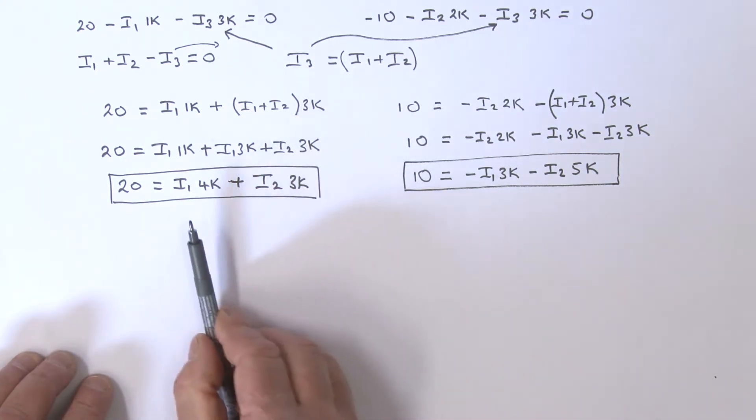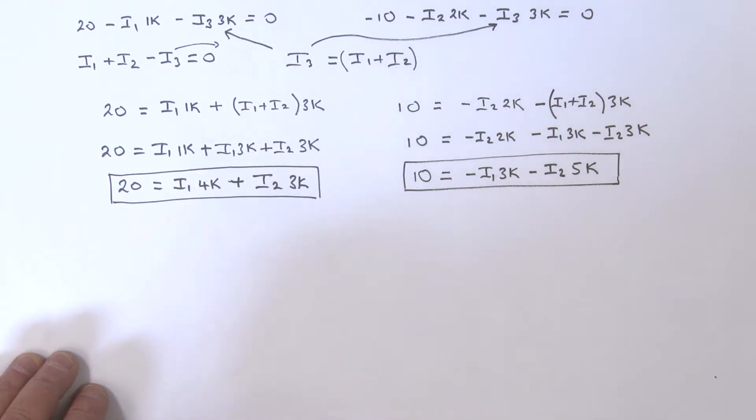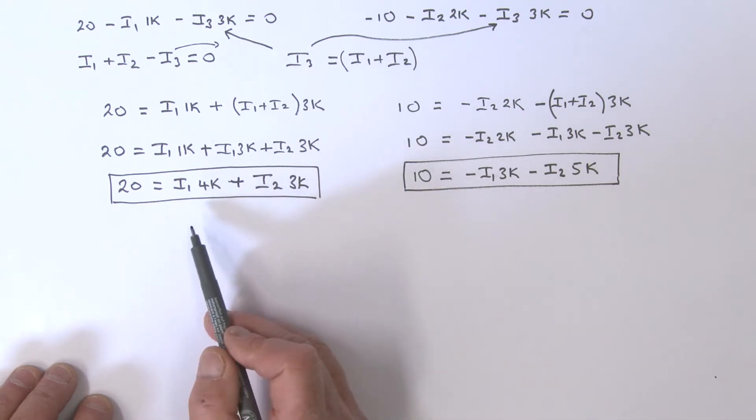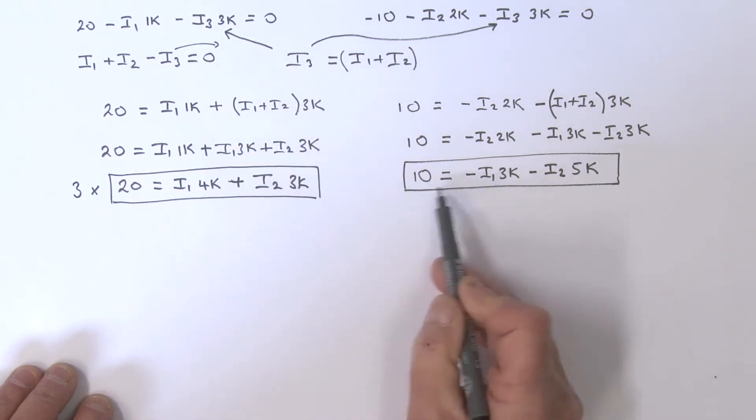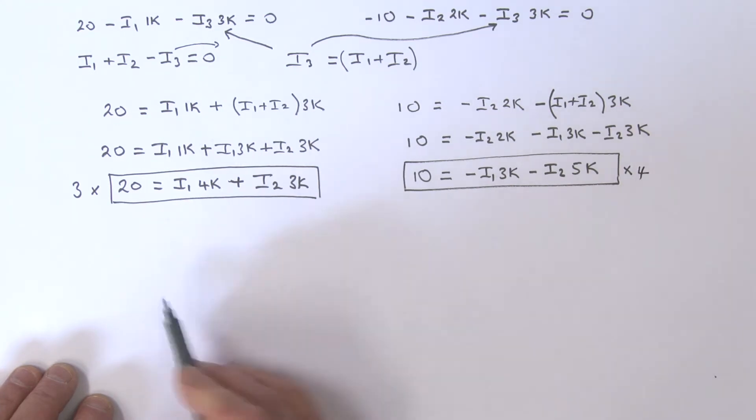So I'm going to look at these two equations and see if I can figure out what i1 and i2 are. It's a simultaneous equation problem, and there are various ways we can do that. This is very simple. Suppose I take this equation and multiply it by 3, and take this equation and multiply it by 4. What would I get?